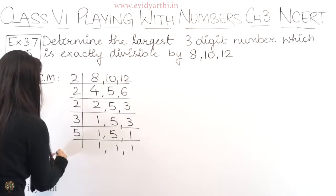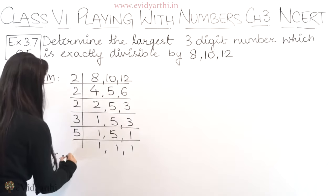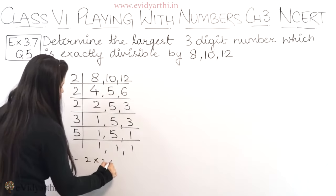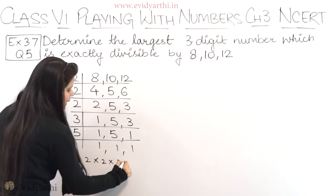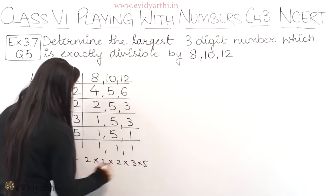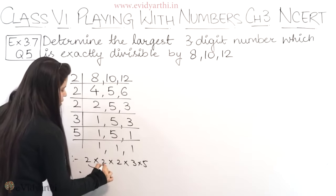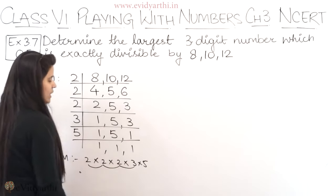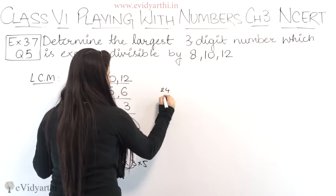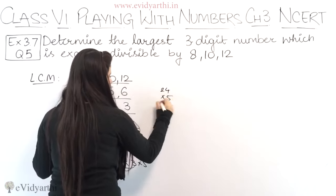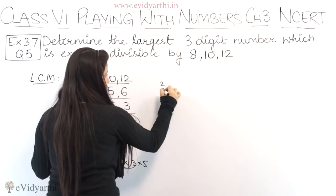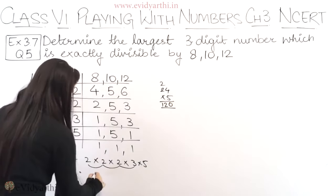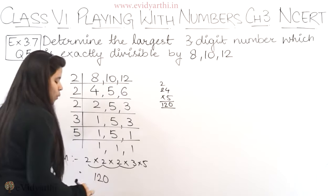Now to find the LCM, we need to multiply all the divisors together. So we have 2 × 2 × 2 × 3 × 5. So 2 × 2 is 4, 4 × 2 is 8, 8 × 3 is 24. Now 24 × 5: 5 × 4 is 20, carry 2, 5 × 2 is 10 plus 2 is 12. So we have the LCM as 120.